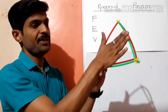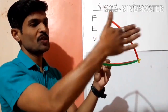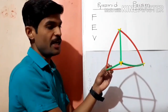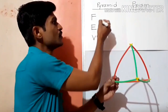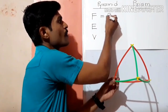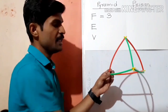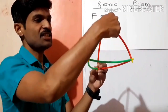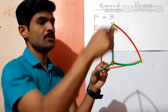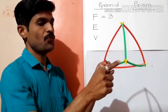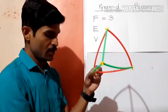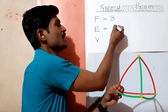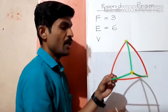Let's count the faces of a triangular pyramid: one, two, three, four. Then counting again: one, two, three, four, five, six. So the triangular pyramid has faces we can count — we can measure faces, edges and vertices.